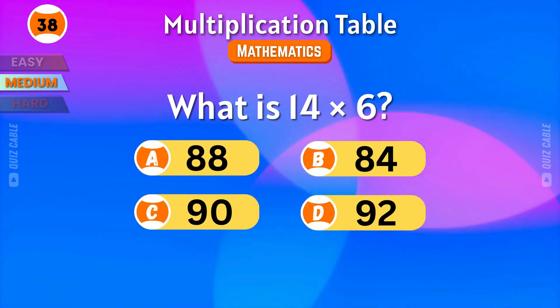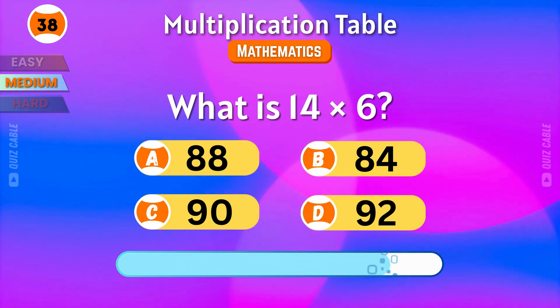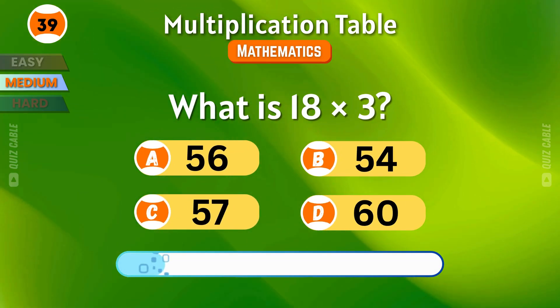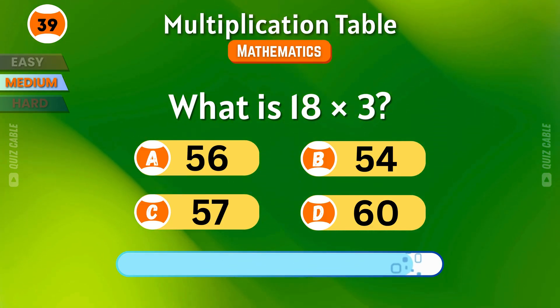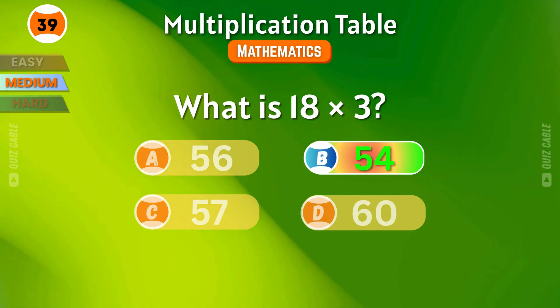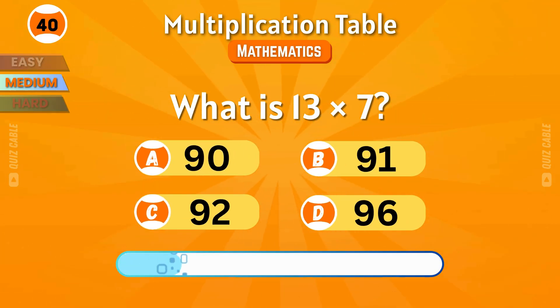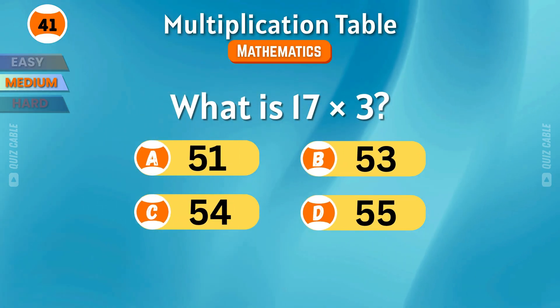What is 14 times 6? Yes — 84. What is 18 times 3? That's 54. What is 13 times 7? The correct answer is 91.